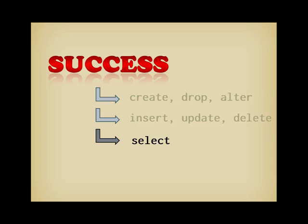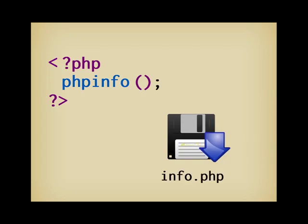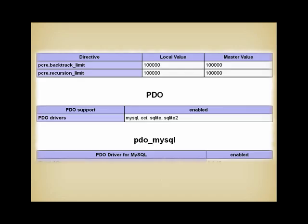Before using PDO, you must check which databases can be accessed with your version of PHP. You should write this very small PHP script, save it as info.php, and call it in your browser to see what is available. Scroll down a lot, and you will see the names of the PDO drivers. Here, I have drivers for MySQL, Oracle, and SQLite versions 2 and 3. If you need a missing driver, then you must configure PHP with additional libraries and rebuild it.